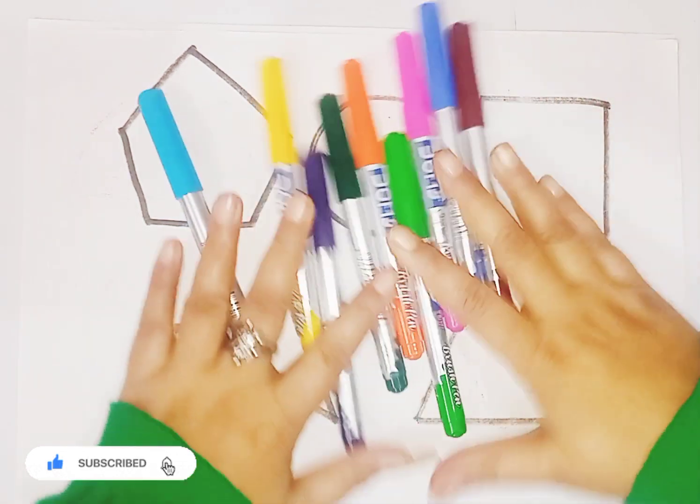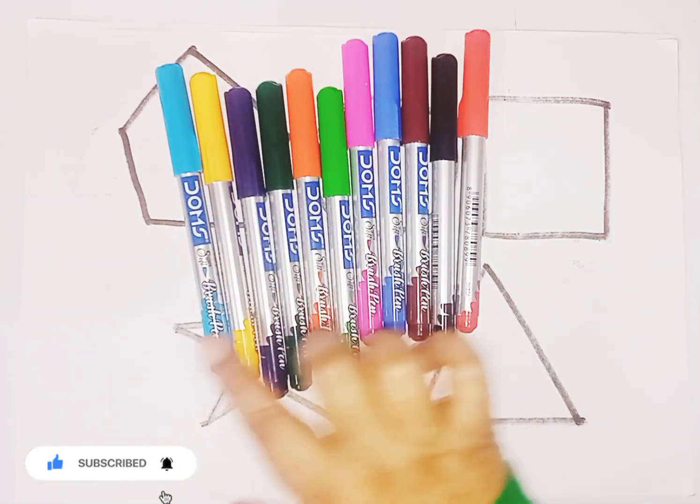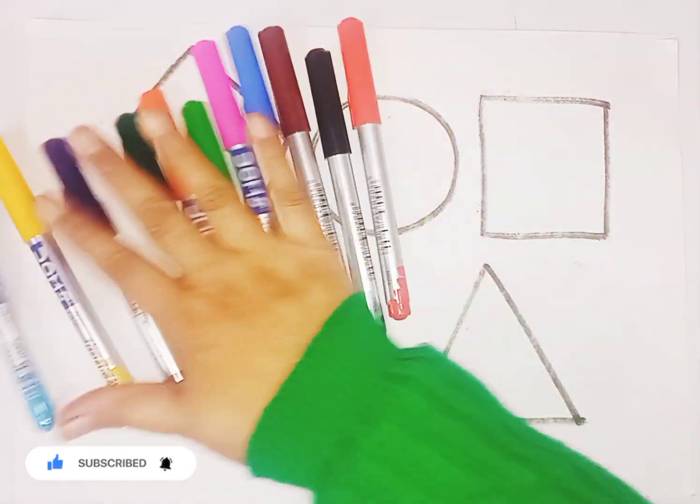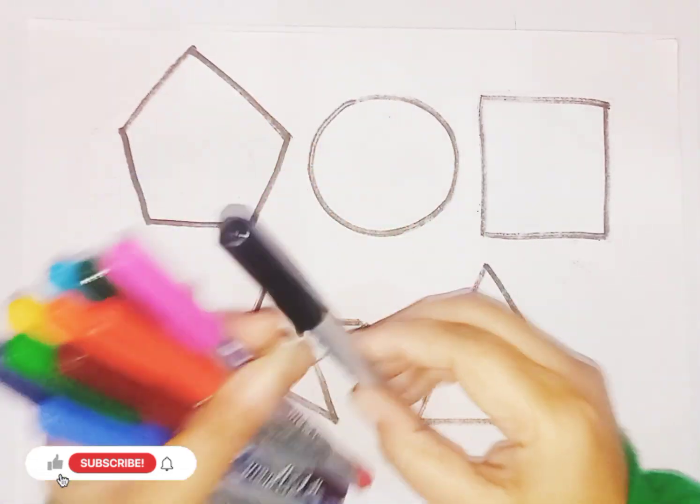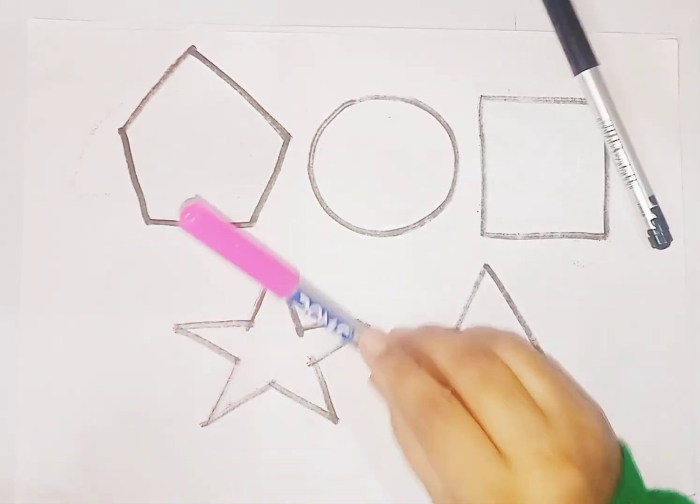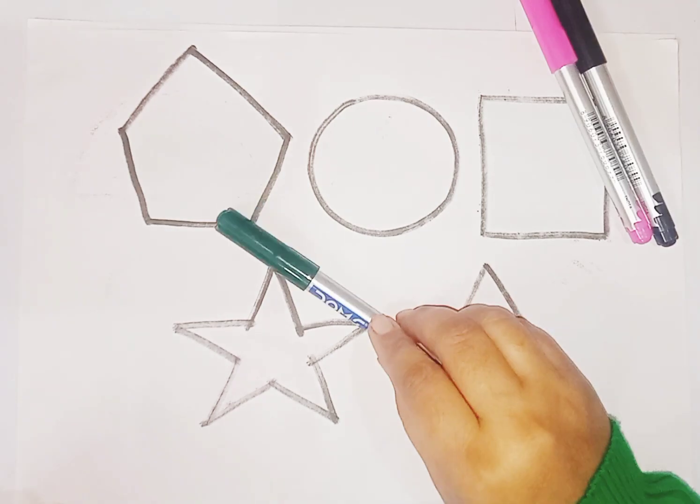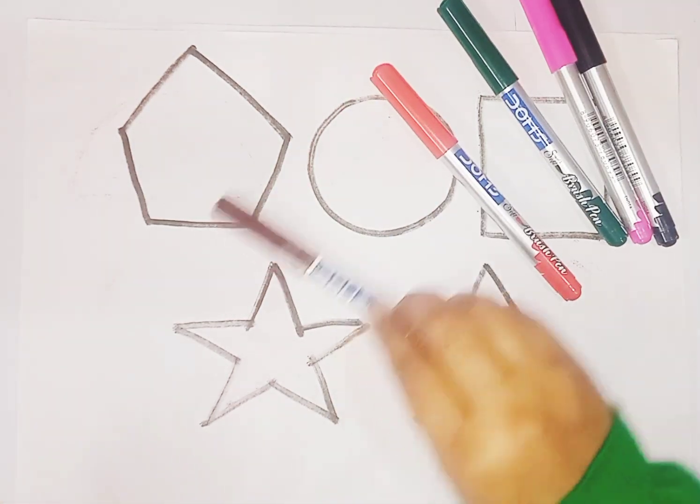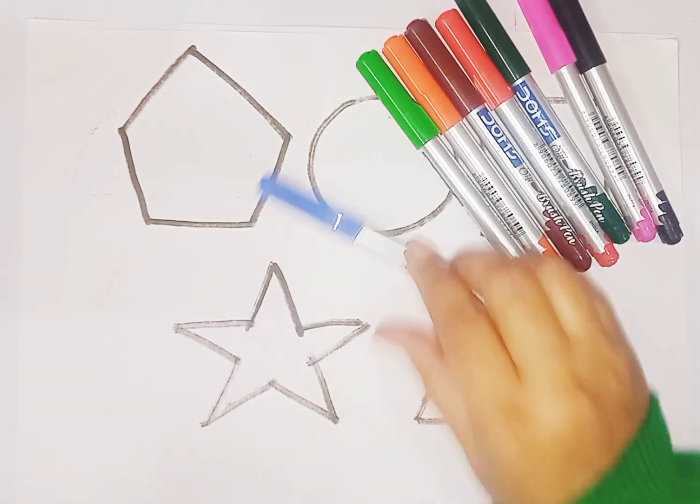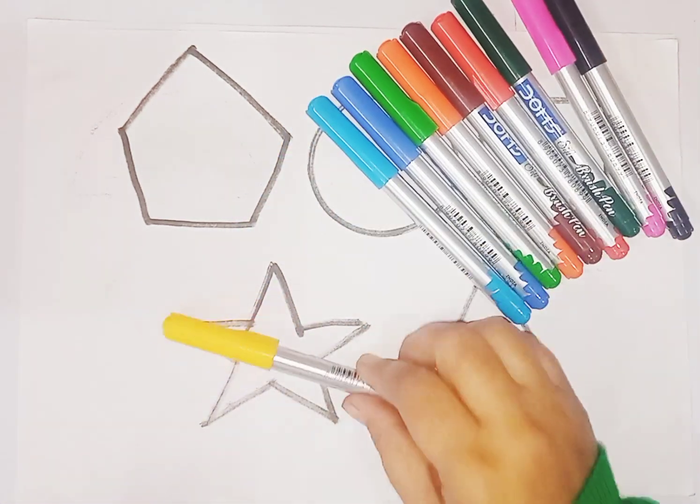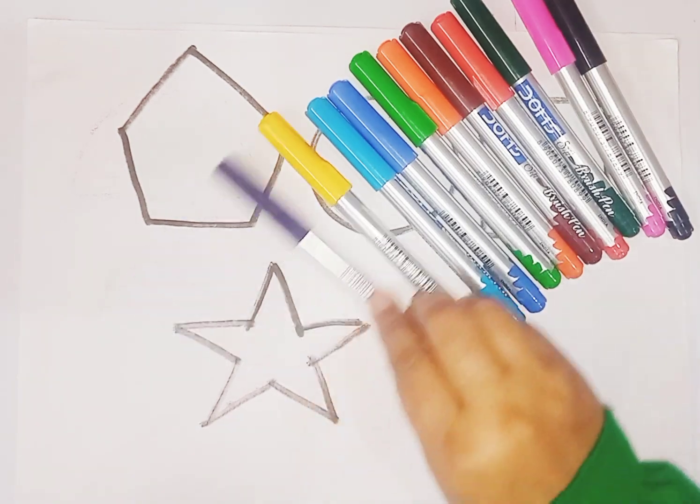Now we learn some colors. These are colors. Let's learn some colors name. This is black color, pink color, green color, red color, brown color, orange color, light green color, blue color, sky blue color, yellow color, violet color.